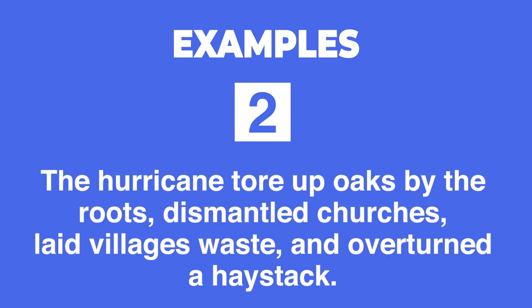Example two: 'The hurricane tore up oaks by the roots, dismantled churches, laid villages waste, and overturned a haystack.' The disaster effects move from the highest importance to the least — uprooting trees and destruction of churches are the most important ones at the peak, and then there is a sudden fall to the destruction of a haystack. This is again an example of anticlimax where a ludicrous effect has been intentionally created to produce a sense of laughter.